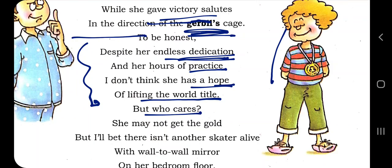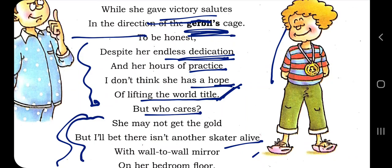The brother is not very hopeful — he thinks his sister is not a very good dancer despite putting in so much effort. But who cares? She may not get the gold, but there isn't any other skater alive with wall-to-wall mirror on her bedroom floor. She is happy in her own world, simply enjoying life and practicing skating. The brother is lovingly remarking about his sister's dedication.